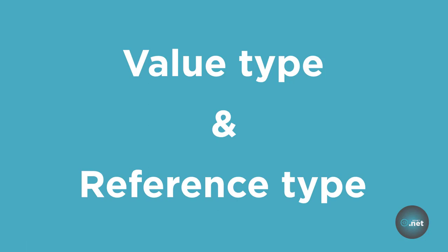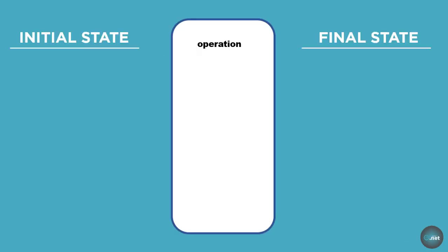A data type is of value type if it holds a data value within its own memory space. For example, consider two integers, int a is equal to 20 and int b is equal to 15. In this case, since integer is a value data type, the system will store number 20 and 15 in the memory space allocated for the variables a and b.